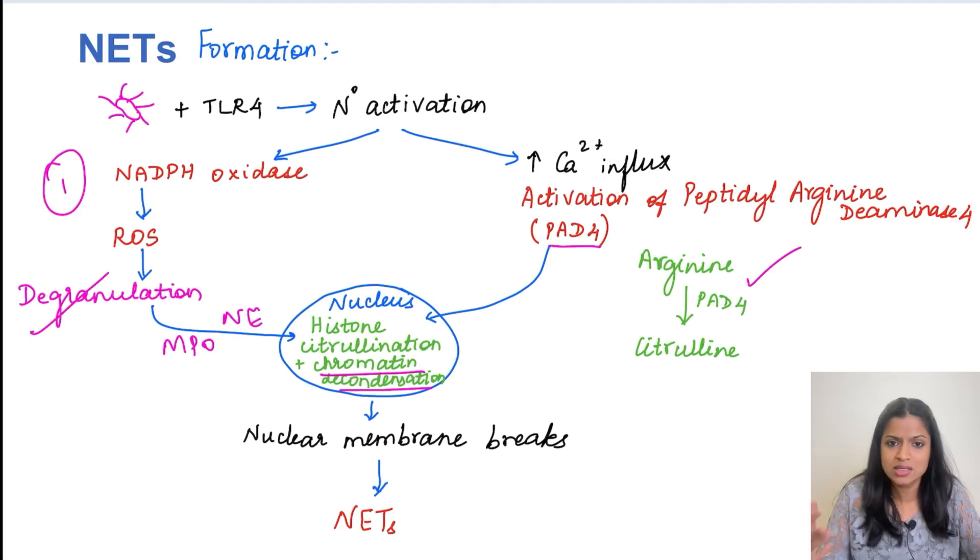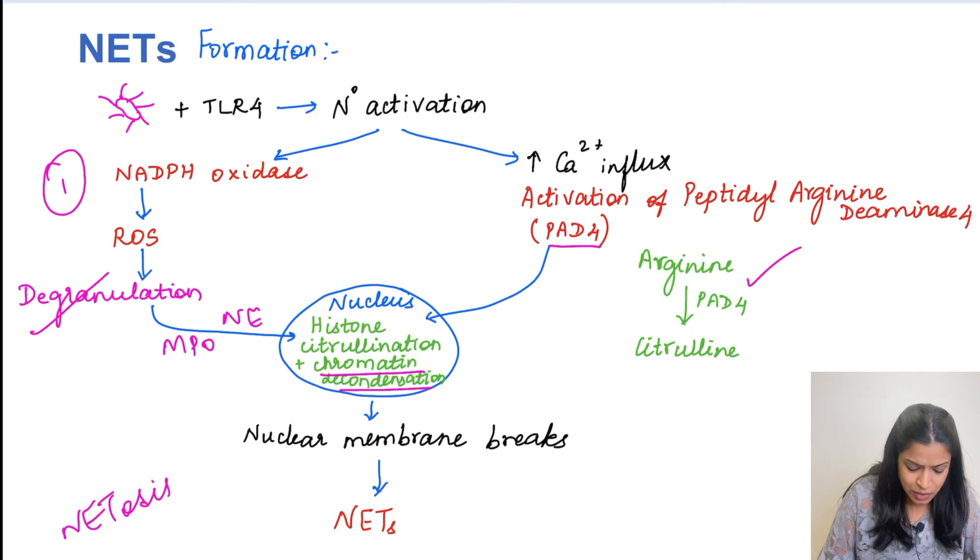So when the nuclear membrane breaks, this nuclear material comes out into the cytoplasm. Again the enzymatic granules and the cytoplasmic proteins all form a complex in this and then they get extruded from the cell. So they break the plasma membrane and then they enter into the extracellular environment. So this process of formation of NETs is called as netosis. So netosis is nothing but the formation of these NETs.